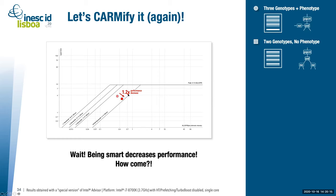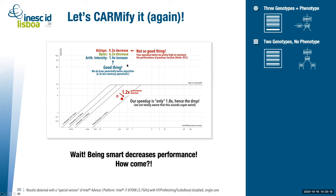Analyzing this, by removing data transfers we decreased bytes transferred by 6.2 times, which was good. But we also decreased total operations by 4.3 times, which was not good. The net result: arithmetic intensity improved 1.4 times, moving right on the roofline. However, the decrease in operations was harmful — the speedup from reduced data transfer wasn't sufficient to compensate for the lost operations.